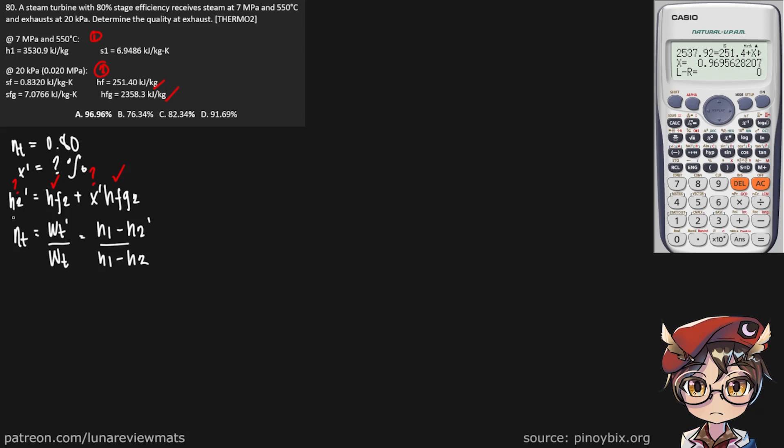We are already given our turbine efficiency. We are also trying to find H2', and we are trying to find H2, which is the ideal exit enthalpy that can be found using this equation. Let's draw some arrows so we don't get confused.